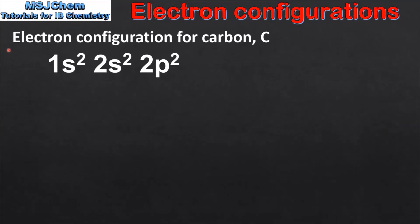The next example we look at is the electron configuration for carbon, which is 1s2, 2s2, 2p2. From this we can deduce that an atom of carbon has 6 electrons. There are 2 electrons in the 1s sublevel, 2 in the 2s sublevel, and 2 in the 2p sublevel.